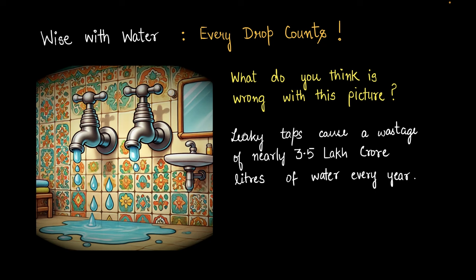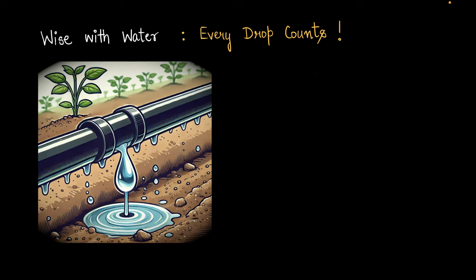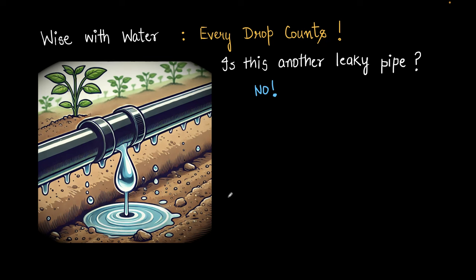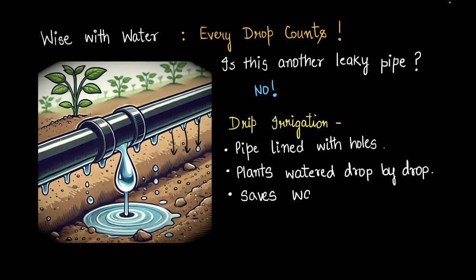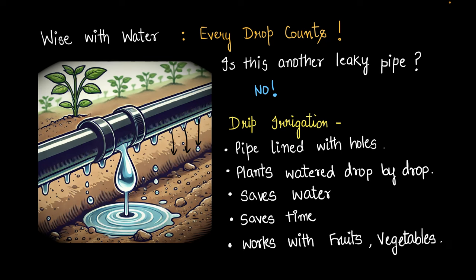So if you have a leaky tap at home, get it fixed. This next picture shows a method of irrigation called drip irrigation. Pipes are lined with holes so that water can slowly drip out of them, and plants are watered drop by drop. This method helps save a lot of water, saves farmers time, and can be used with fruits and vegetables.